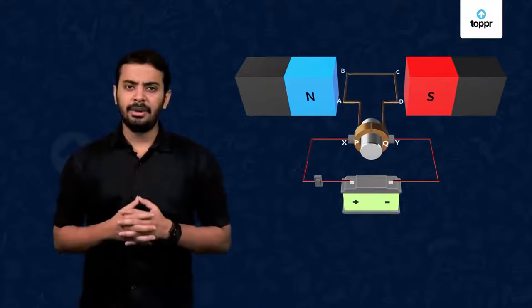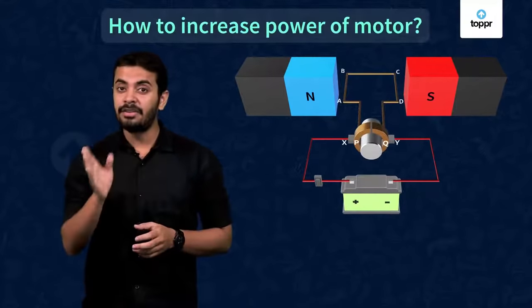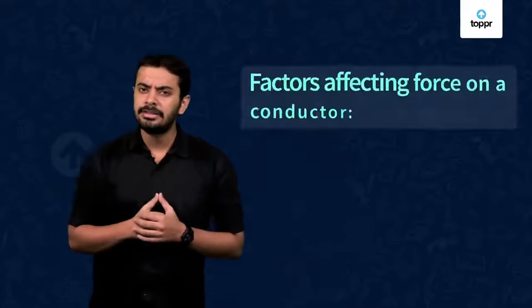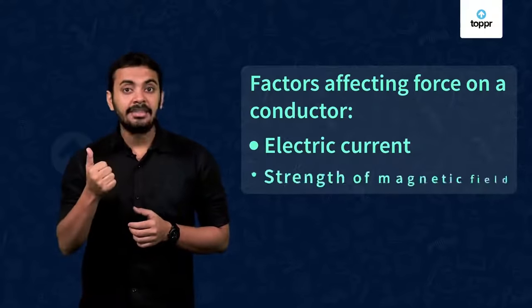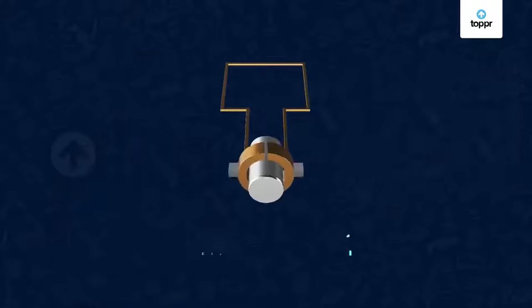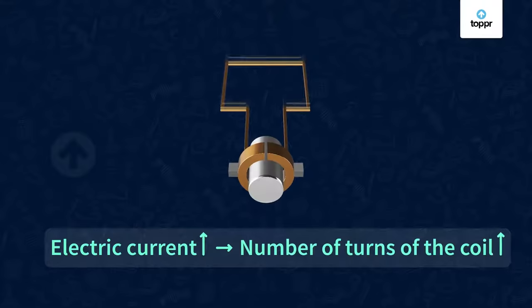Now, let's find out if we can increase the power of this electric motor. First, we can try to increase the number of rotations. Can you recall the factors on which the magnetic force in a current carrying wire depends? They were electric current and the strength of the magnetic field. To increase the electric current, we can increase the number of turns of the coil.